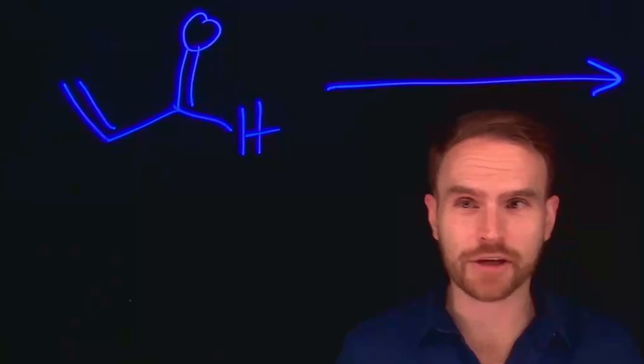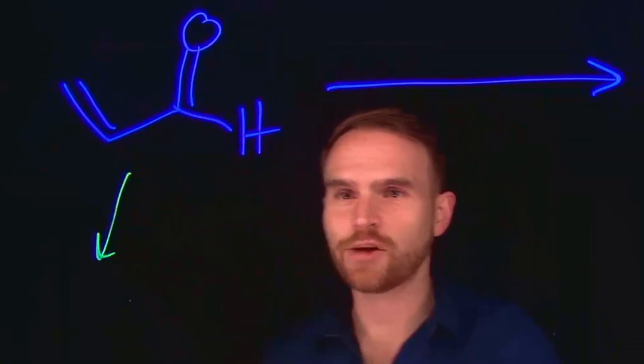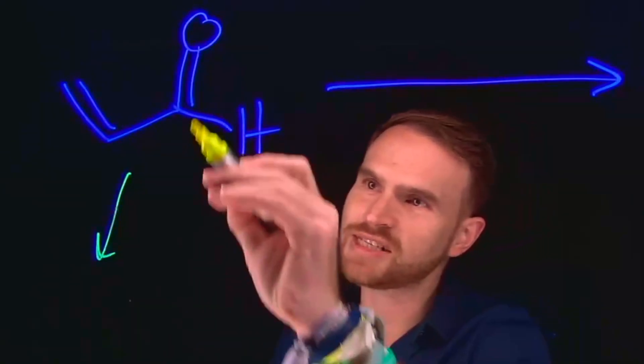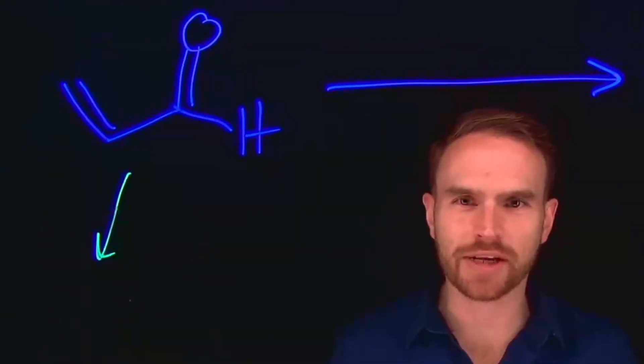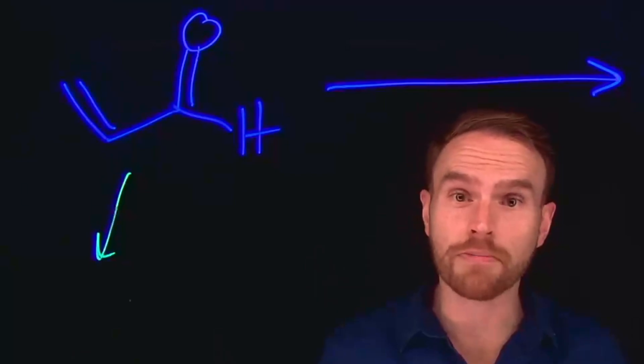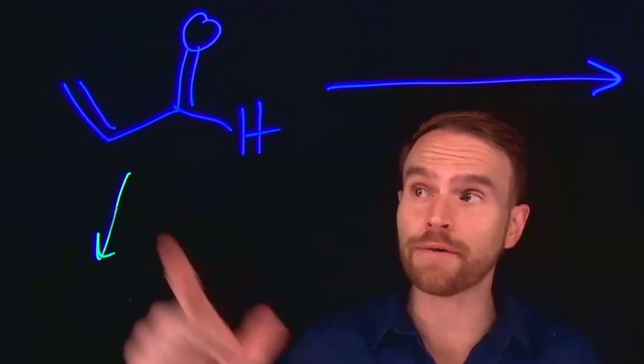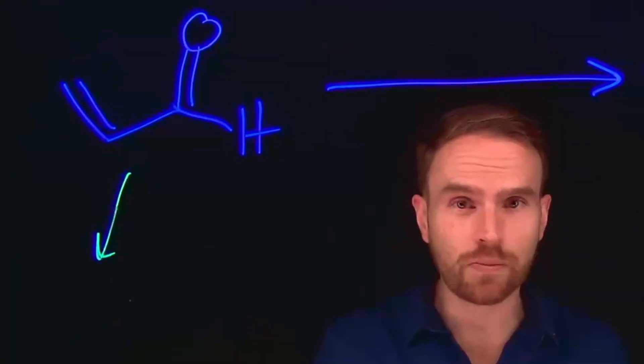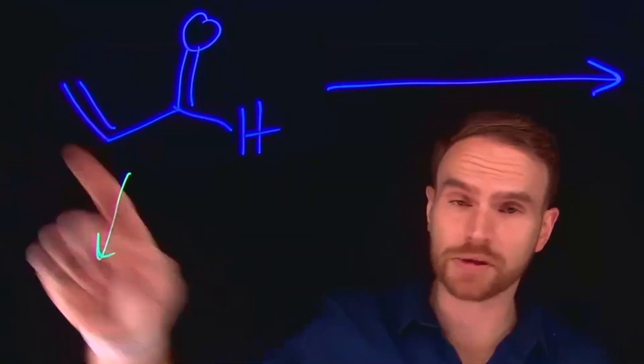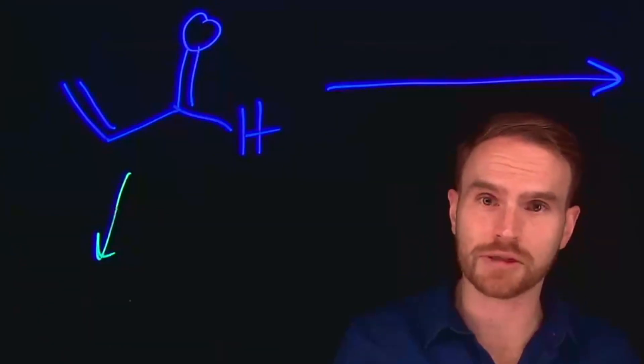The pathway that I figured out was first to add an organolithium species to do an addition at this carbonyl carbon. When you have these alpha-beta unsaturated carbonyl compounds, remember that we can perform what are called Michael additions at either the 1-4 position or the 1-2 position. In order to achieve that 1-2 position, as opposed to the 1-4 position, we need to use an organolithium species.